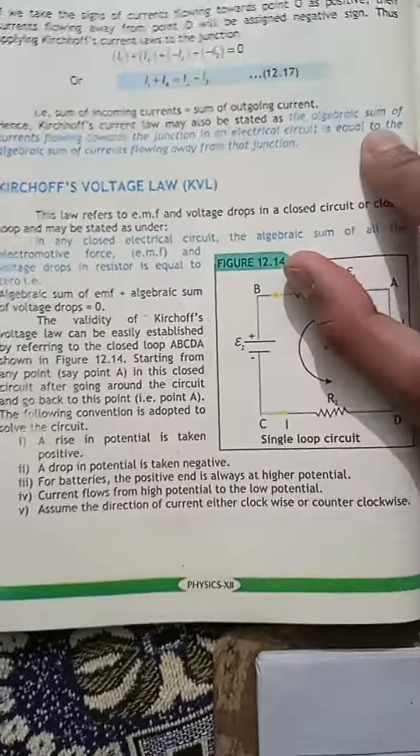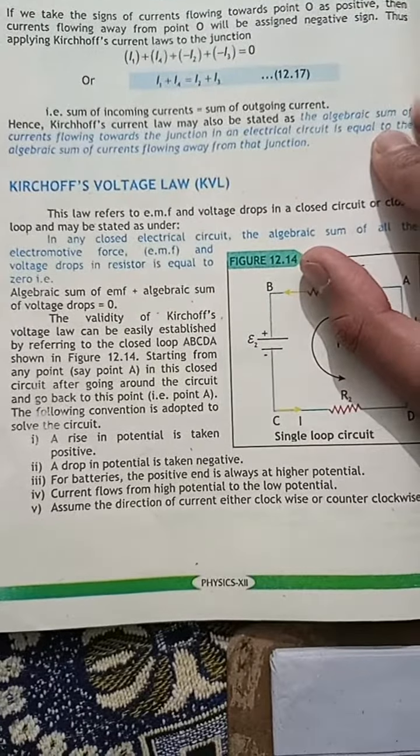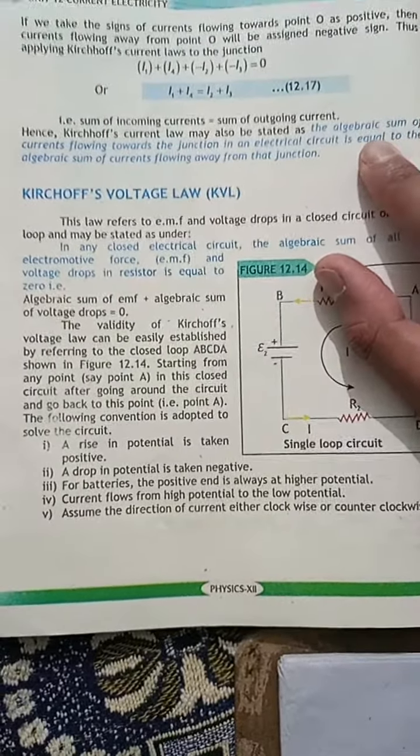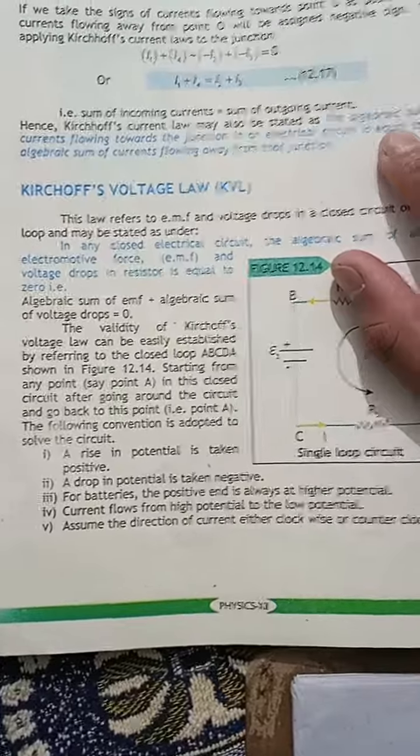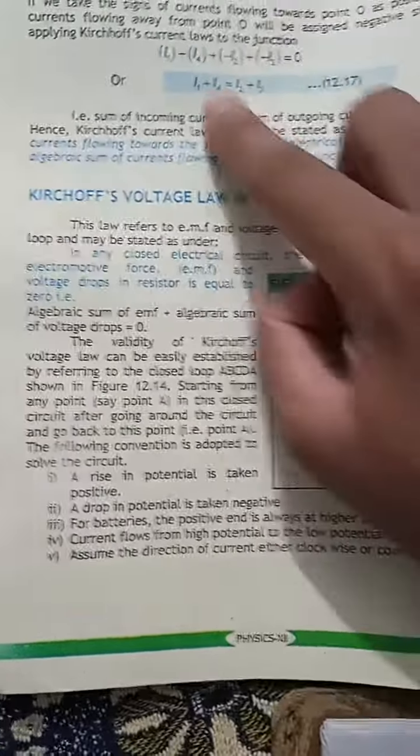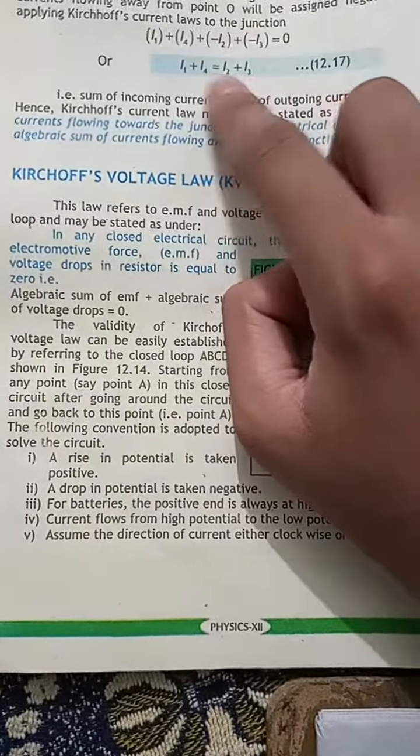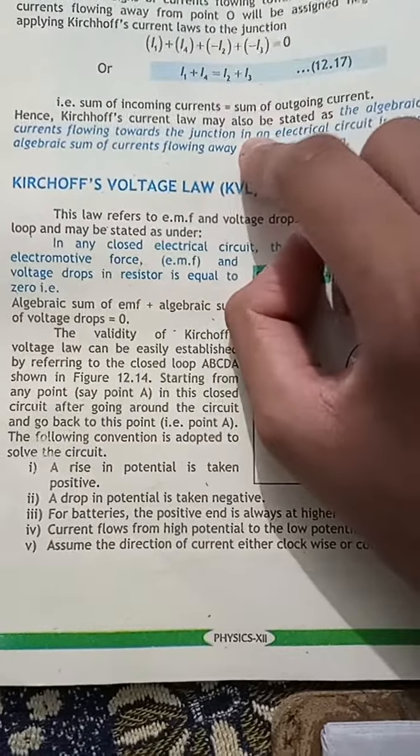We are going towards a definition where it says: the algebraic sum of current flowing towards the junction in an electric circuit is equal to the algebraic sum of current flowing away from that junction. Like the lines are coming in positive, going out negative.